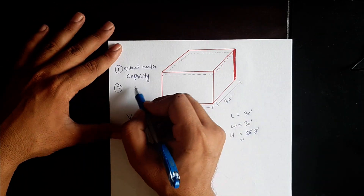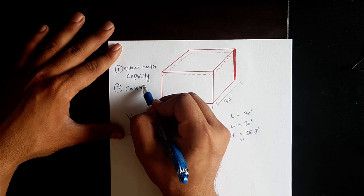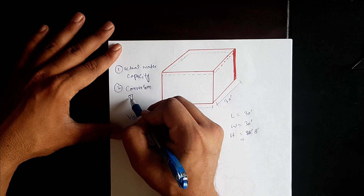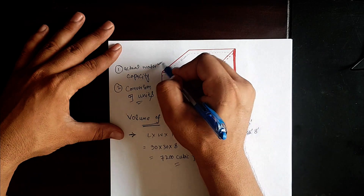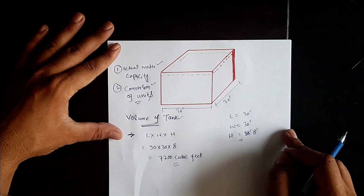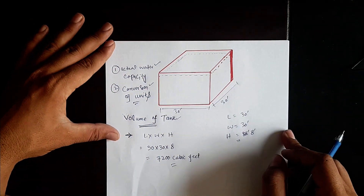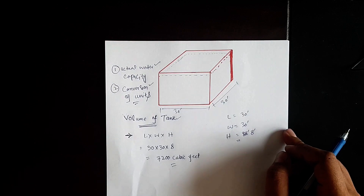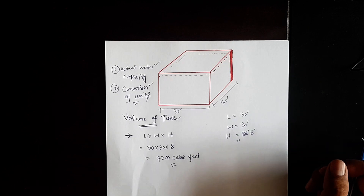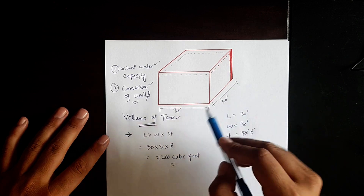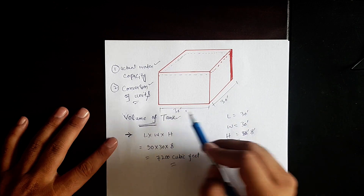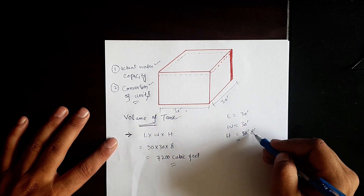There are two basic errors that we do not consider during our calculation processes and during the design work of any water tank. The first is the freeboard, and the second is the conversion of units. So let's suppose I have a water tank with a length of 30 feet, width of 30 feet, and height of 8 feet.